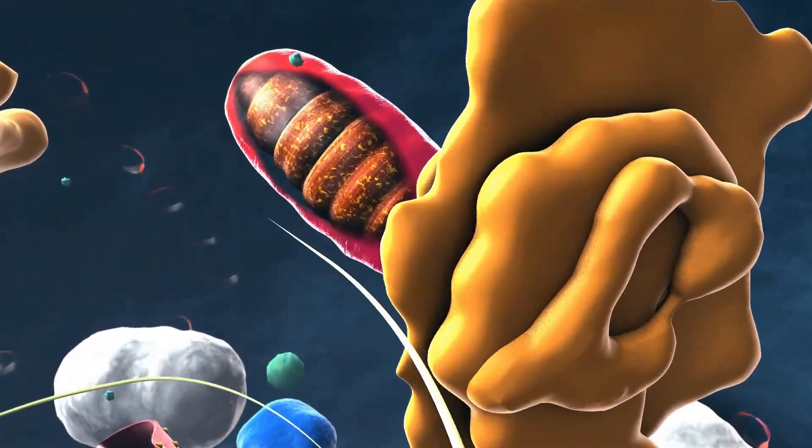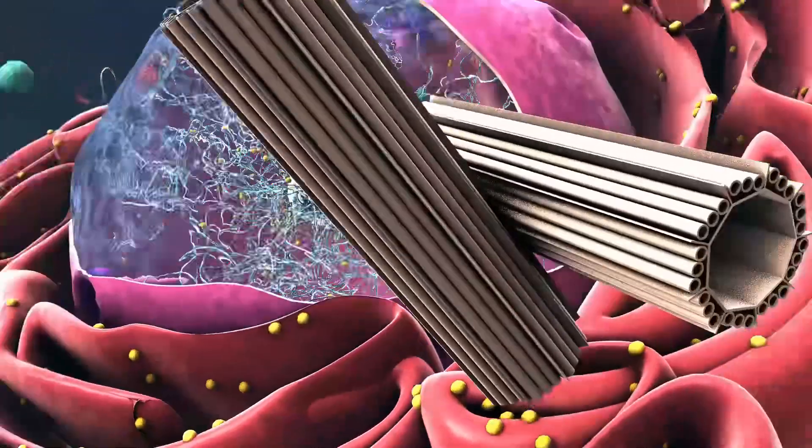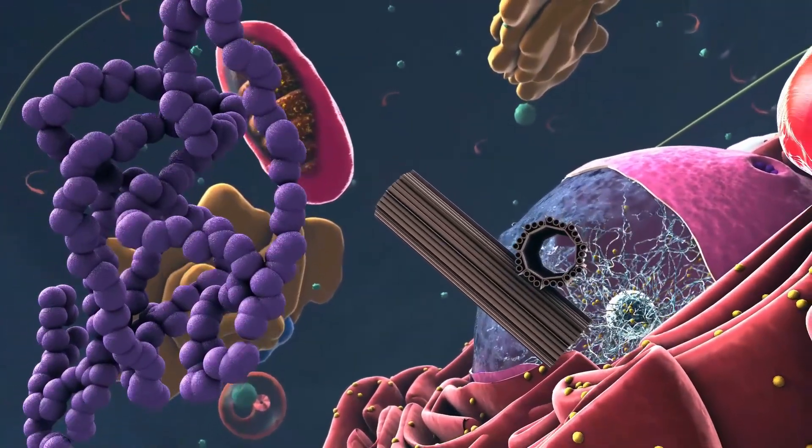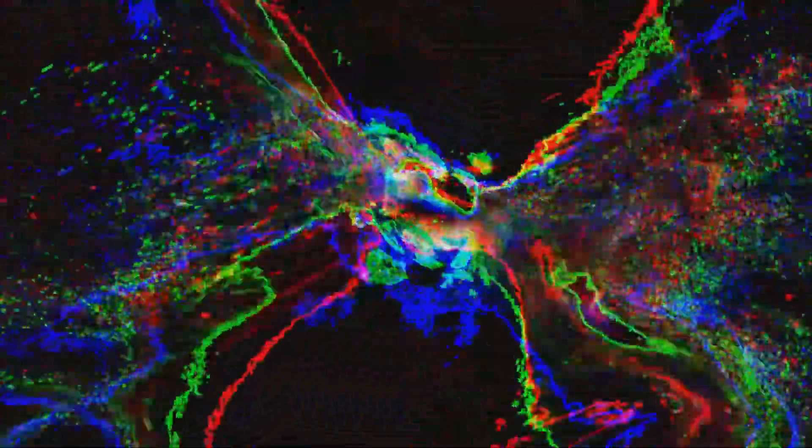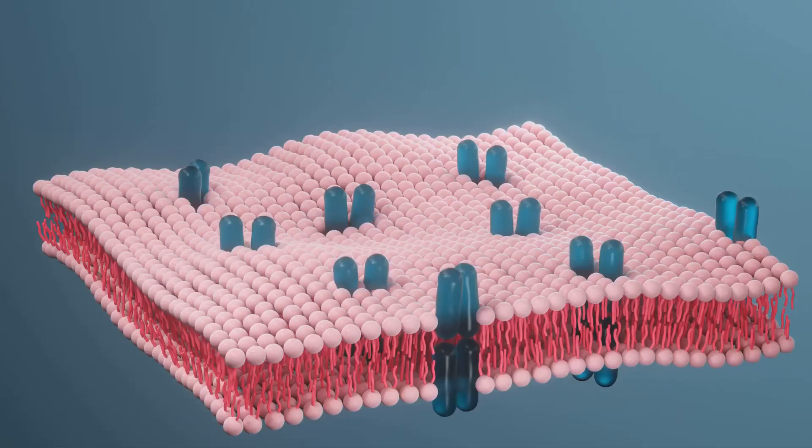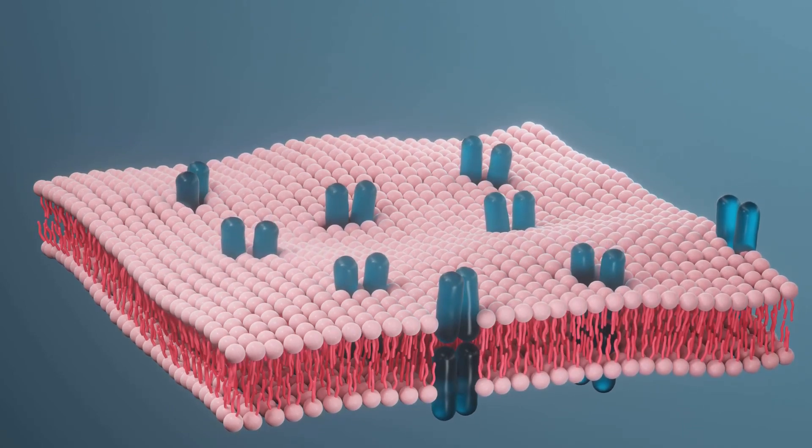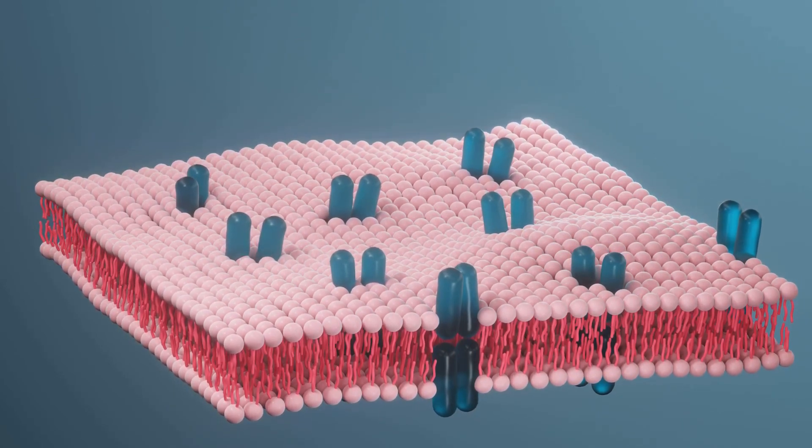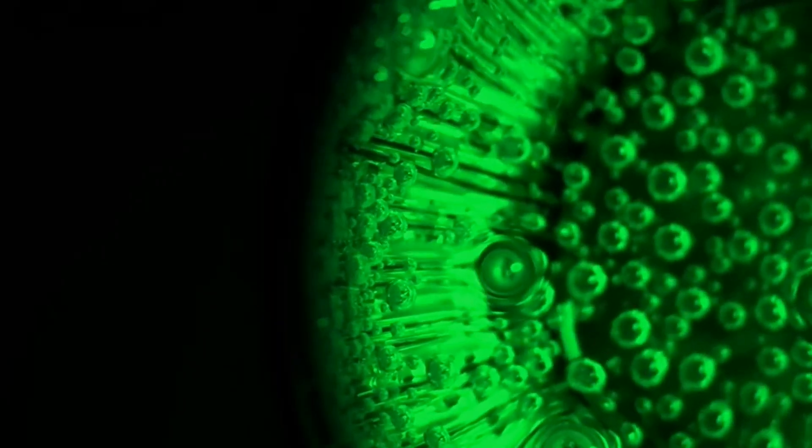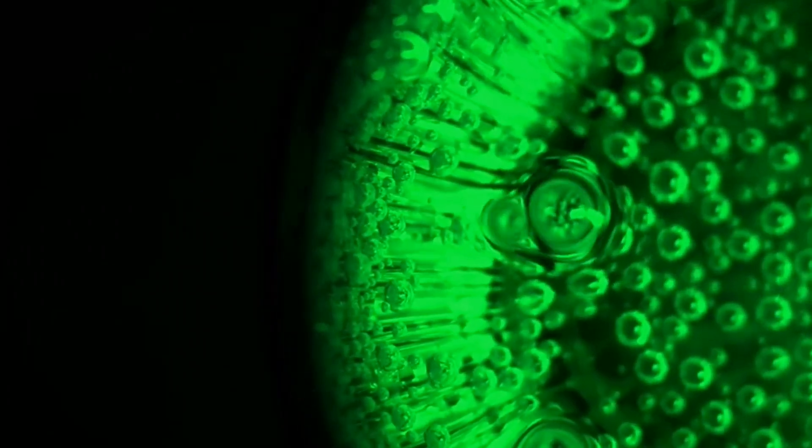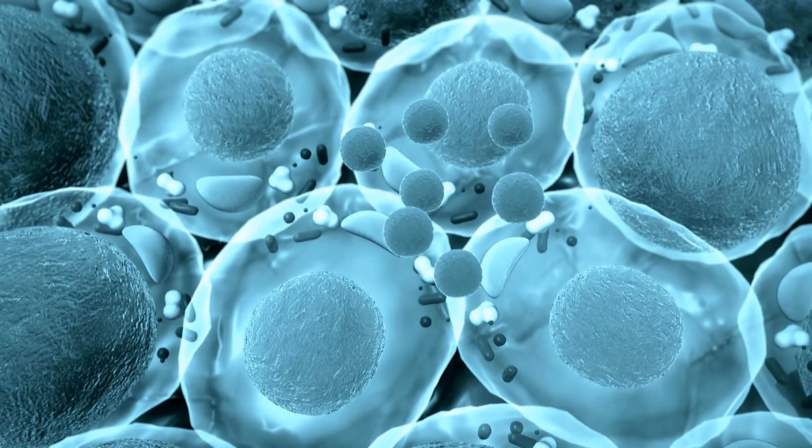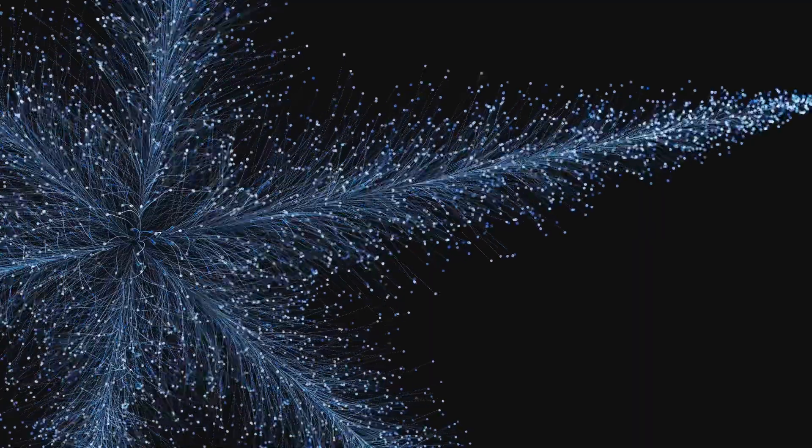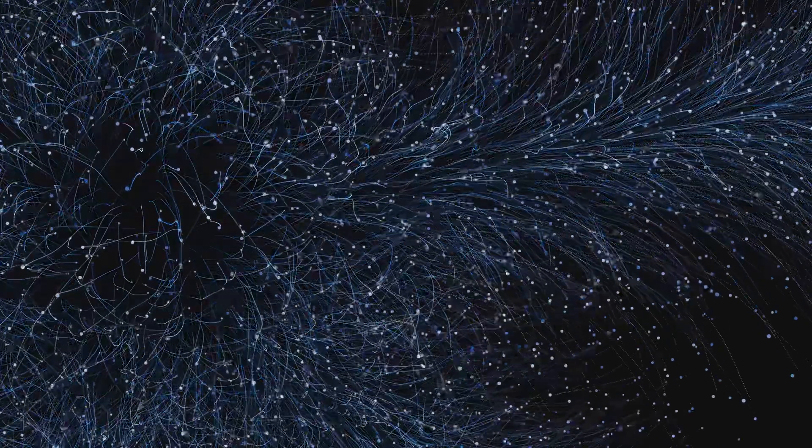The ER is a complex and dynamic network of interconnected sacs and tubules that extends throughout the cytoplasm of eukaryotic cells. Think of it like a vast interconnected network of pipes and chambers spreading throughout the cellular landscape. Its membrane is continuous with the outer nuclear membrane, forming a continuous network that encloses a single internal space known as the ER lumen. The sheer size of the ER is impressive. In fact, it's the largest organelle in most eukaryotic cells. Its membrane can account for as much as half of the total membrane surface area of a cell. This vast network provides a large surface area for its many cellular functions.